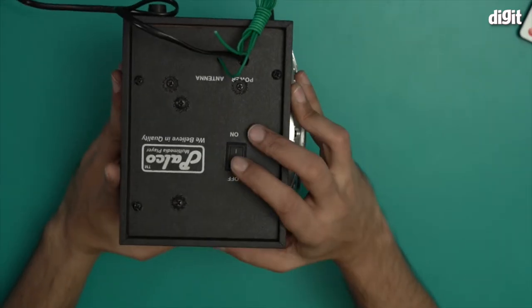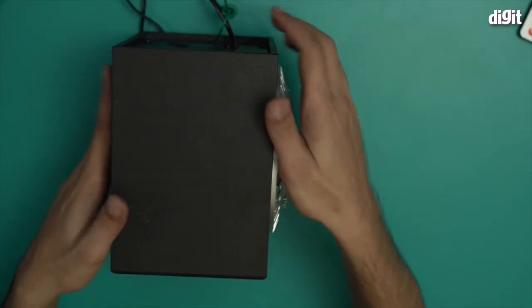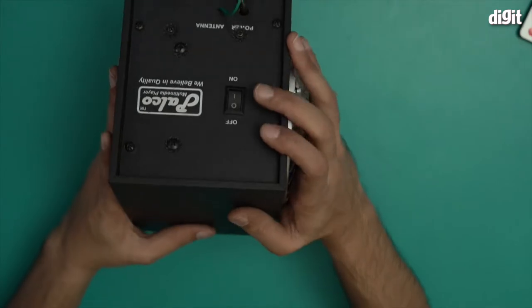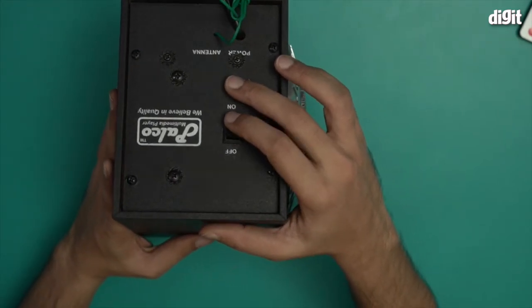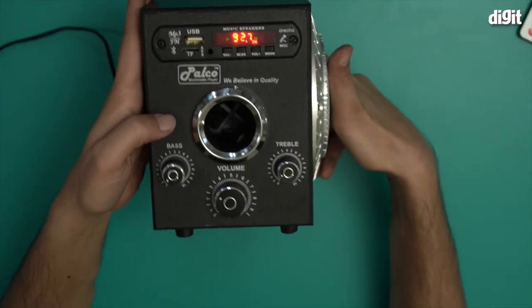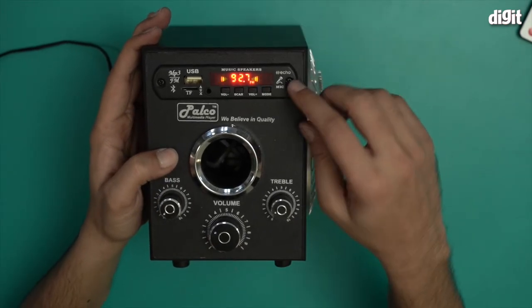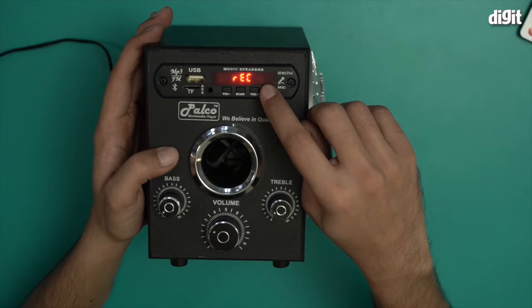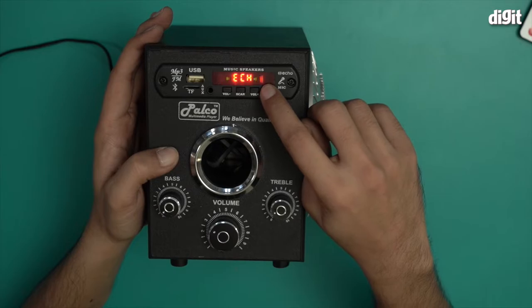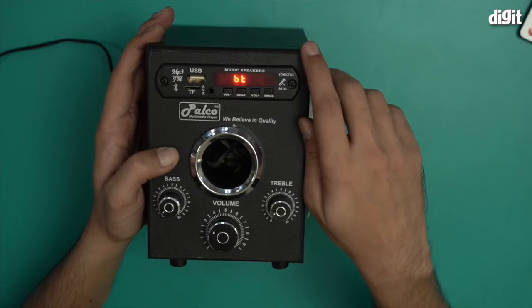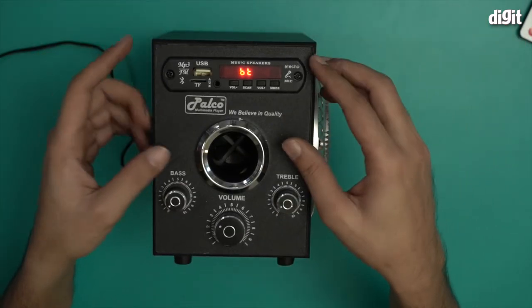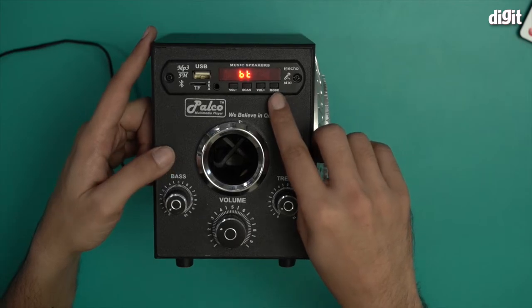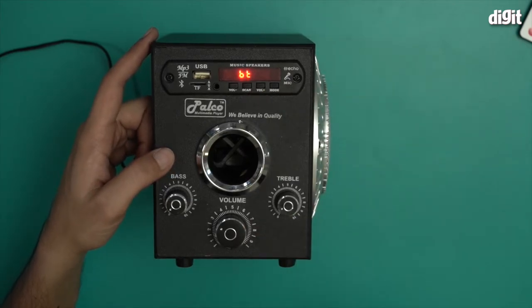So it was already on, so it went directly to FM mode. I switched it off now. I will turn it back on now. So it started with the FM mode, but I pressed the mode button four times to get to the Bluetooth mode section.